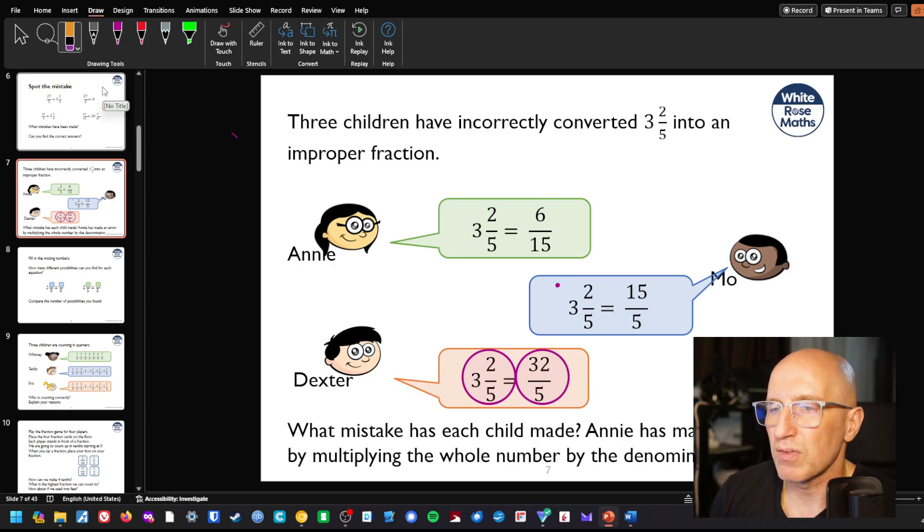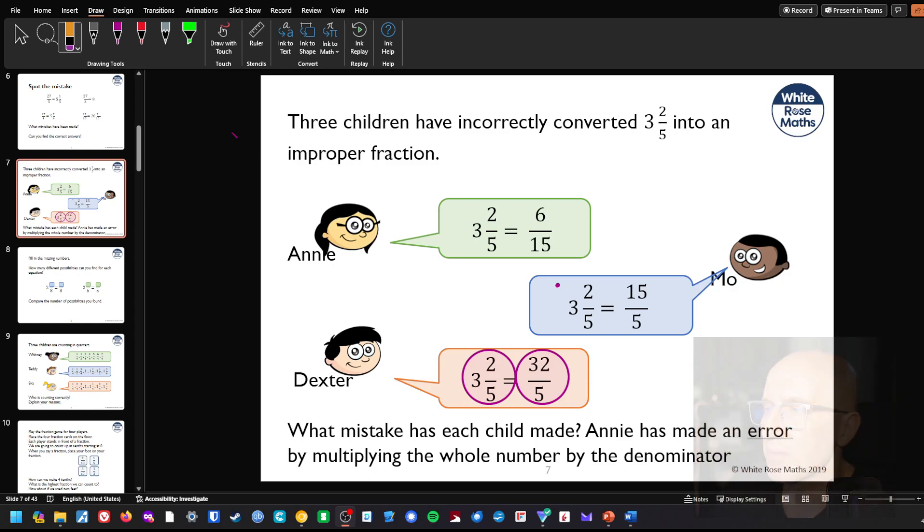The other thing is if you notice at the bottom here, I've got Annie has made an error. It says Annie has made an error by multiplying the whole number by the denominator.